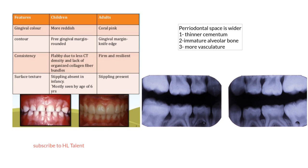Now let us talk about the radiographic features. In the primary dentition, the radiographic distance between the cementoenamel junction and the alveolar crest is about 0 to 2 mm. This is because of the process of eruption of the teeth.